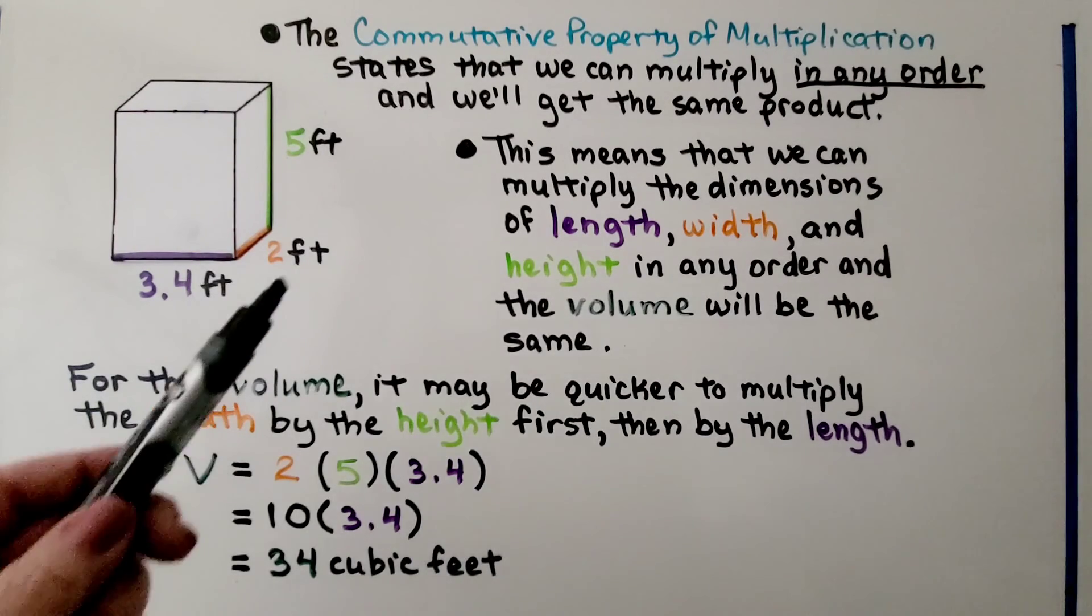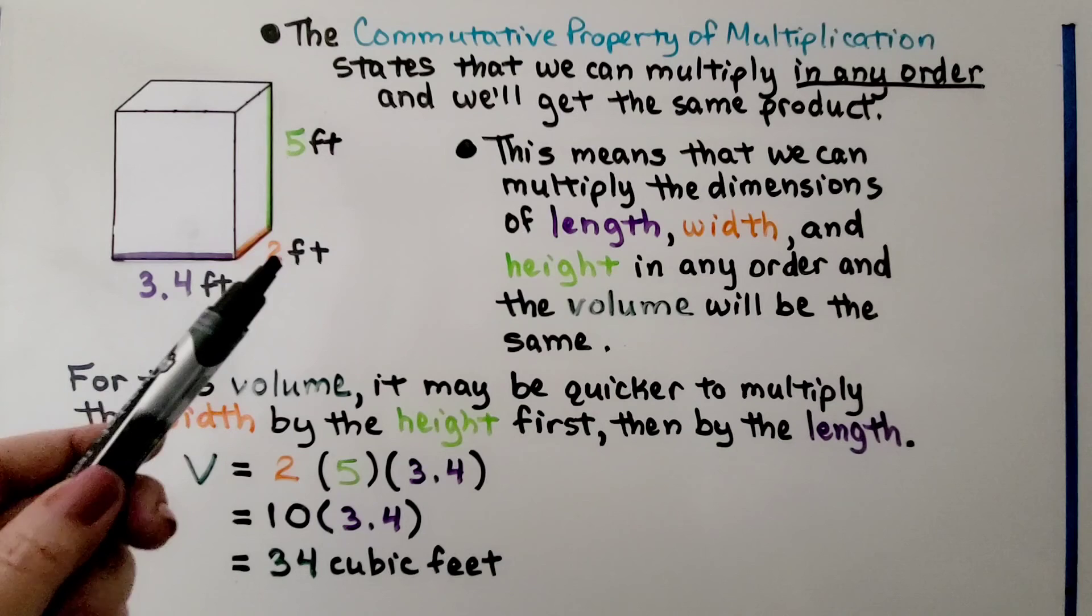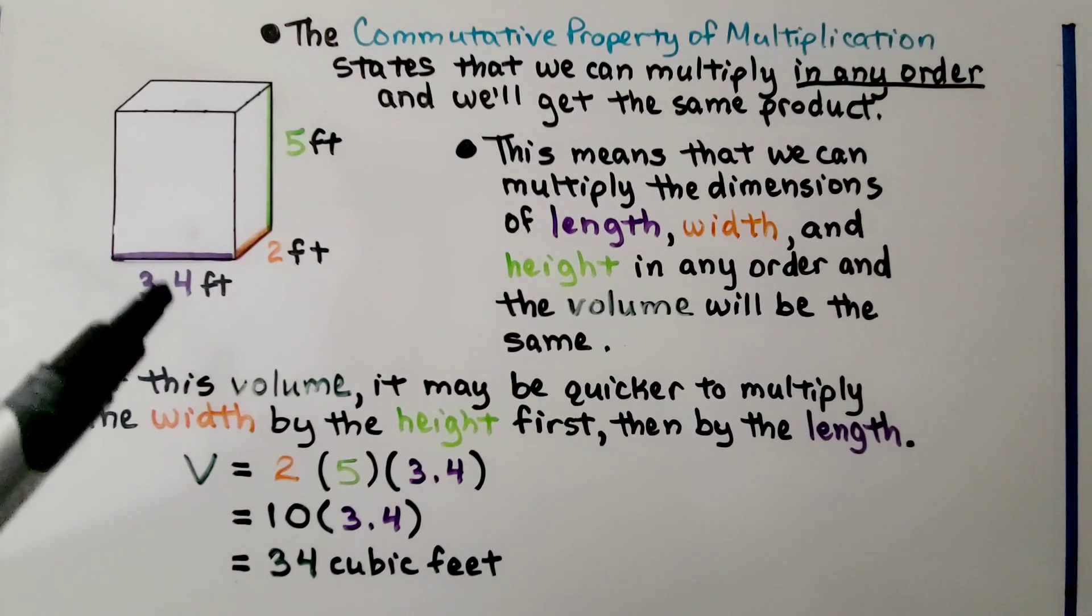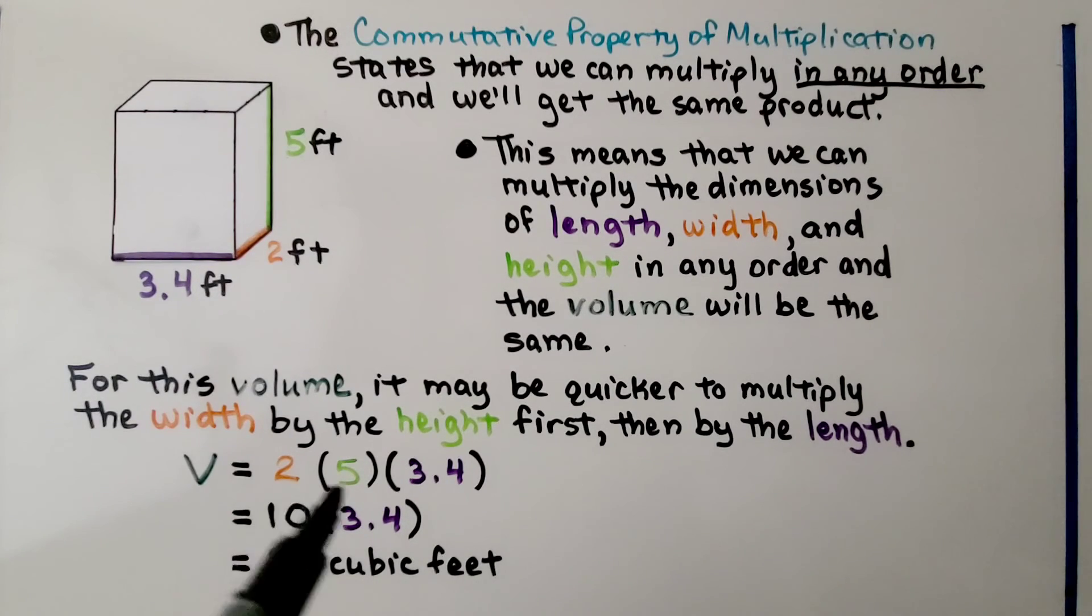We have two times five. That's ten. Now we can multiply that to the three and four tenths. Ten times three and four tenths is thirty-four cubic feet.